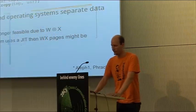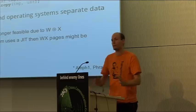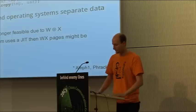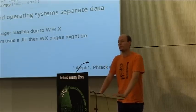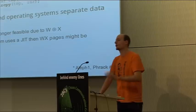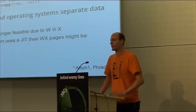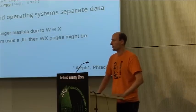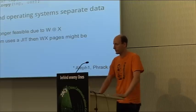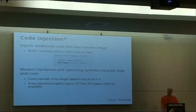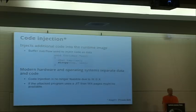But things have changed since then. Modern hardware and operating systems separate data and code. On a page-level granularity, the operating system can enforce that a memory page is either data or code. If it's data and the attacker writes code into that page and wants to execute it by overwriting the return instruction pointer, the processor will raise an exception and stop the program. Due to this additional hardware, code injection is no longer feasible because protection mechanisms ensure a page is either writable or executable, but never both.